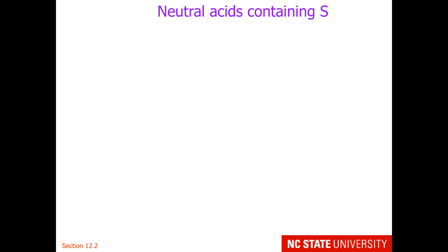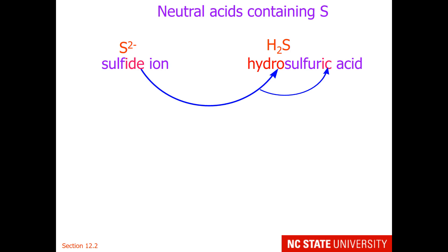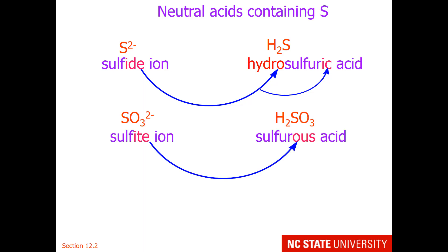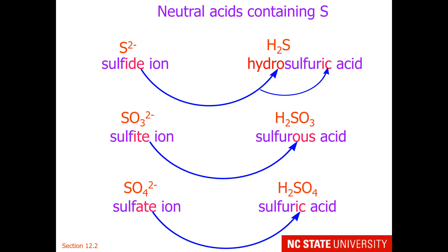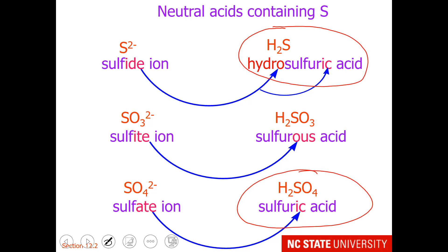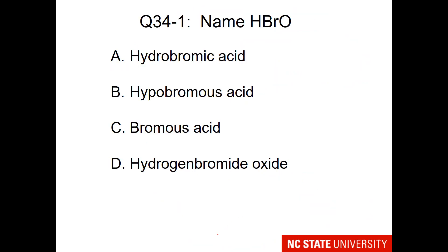This can get a little confusing. Using neutral acids containing sulfur as an example: if it's based on the sulfide ion, we call it hydrosulfuric acid; if it's based on the sulfite ion, we call it sulfurous acid when fully protonated; and if it's based on the sulfate ion, we call it sulfuric acid when fully protonated. The confusing part is hydrosulfuric versus sulfuric acid — hydrosulfuric acid is actually a weak acid, smelly but weak, whereas sulfuric acid is very strong and is what you encounter in car batteries. So you don't want to get their names confused.